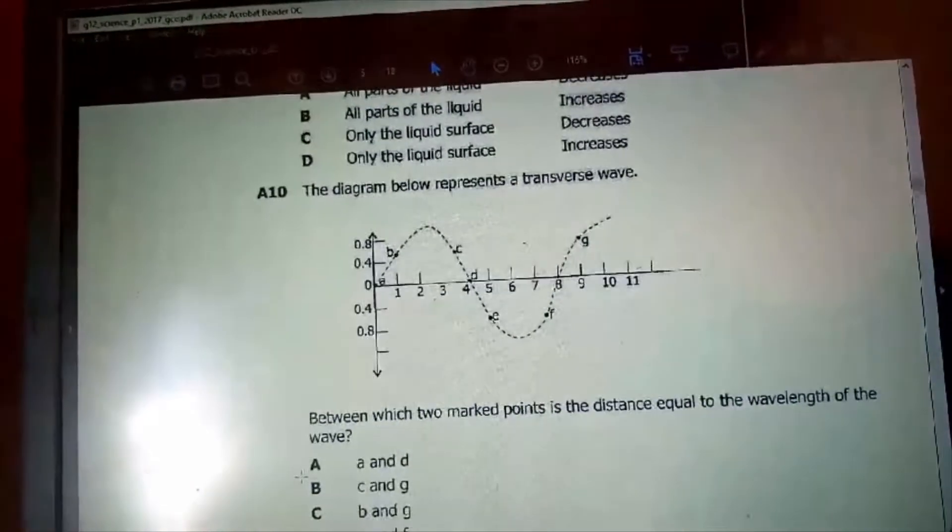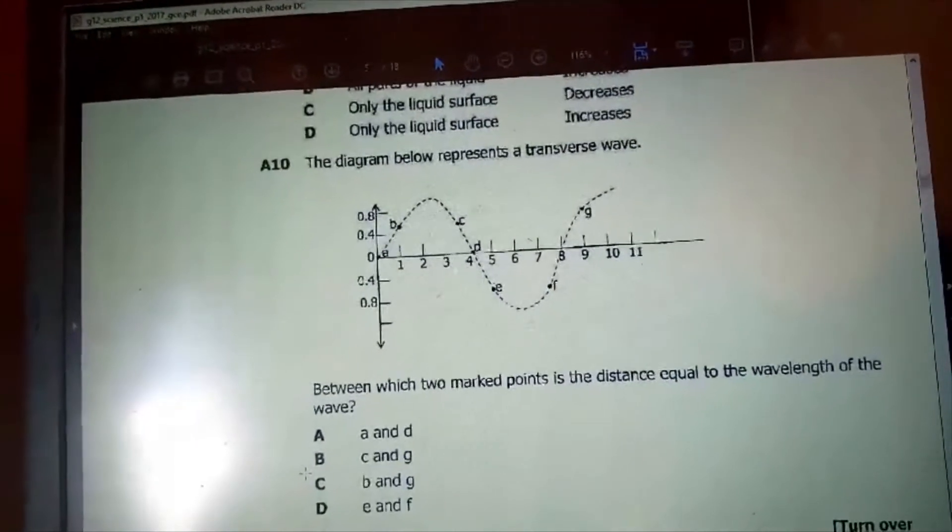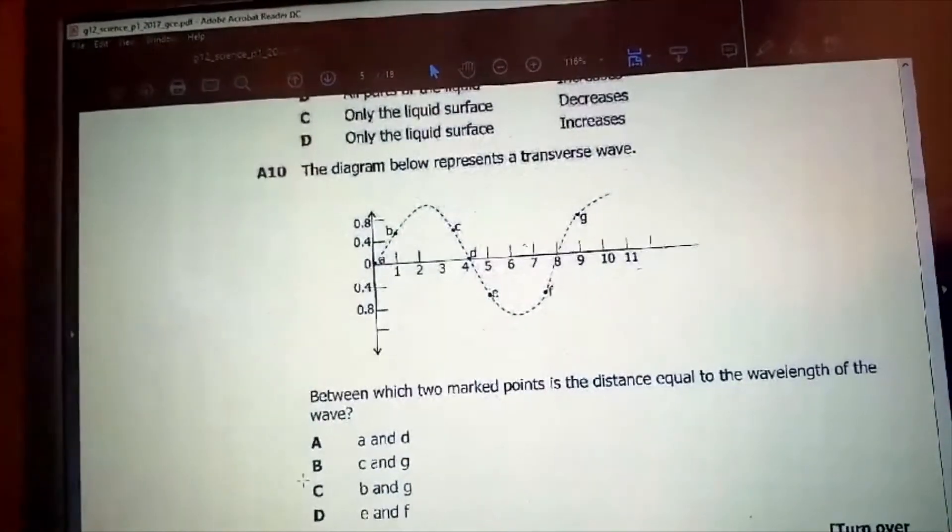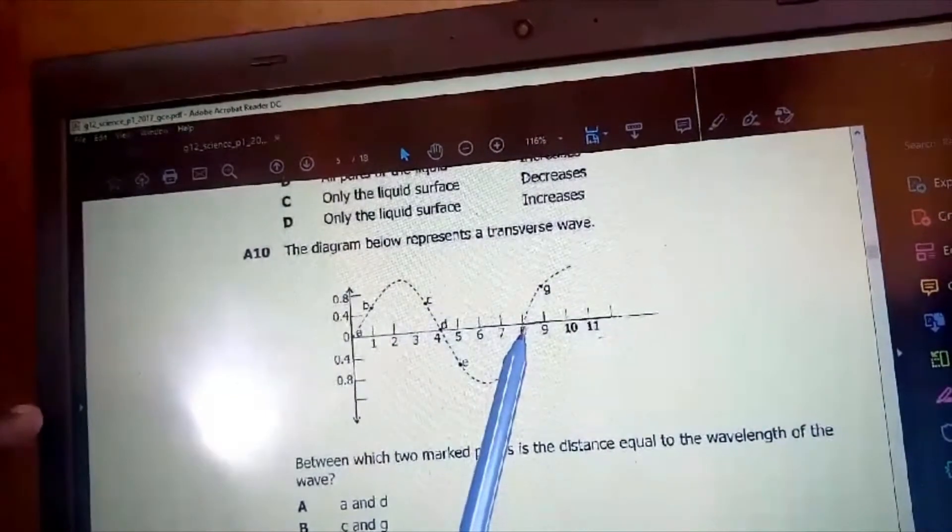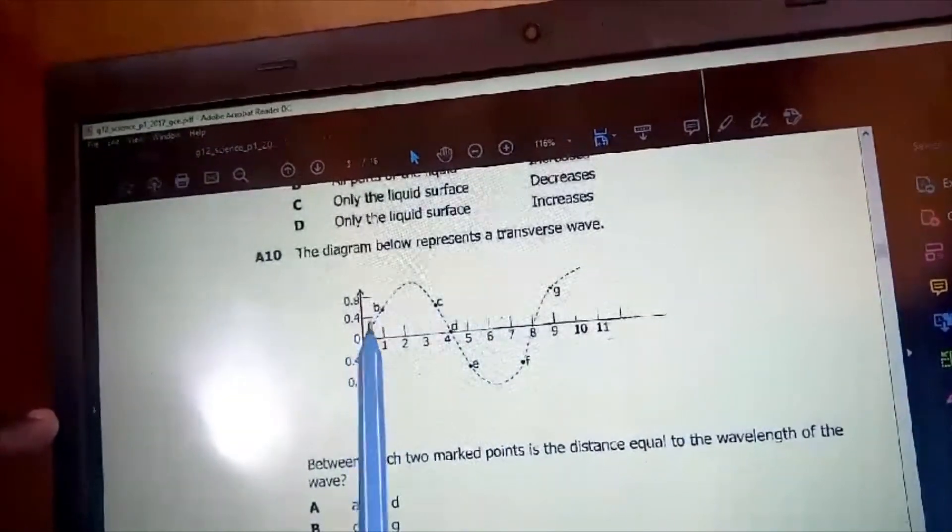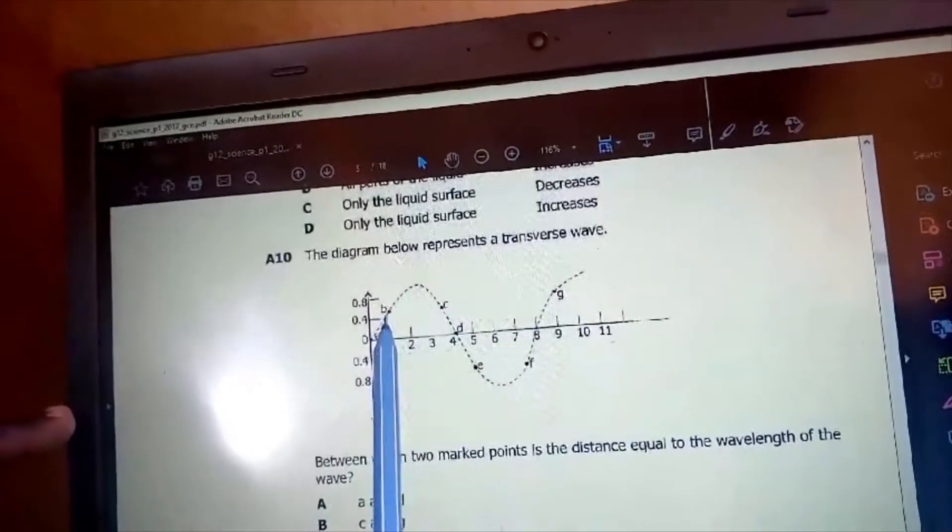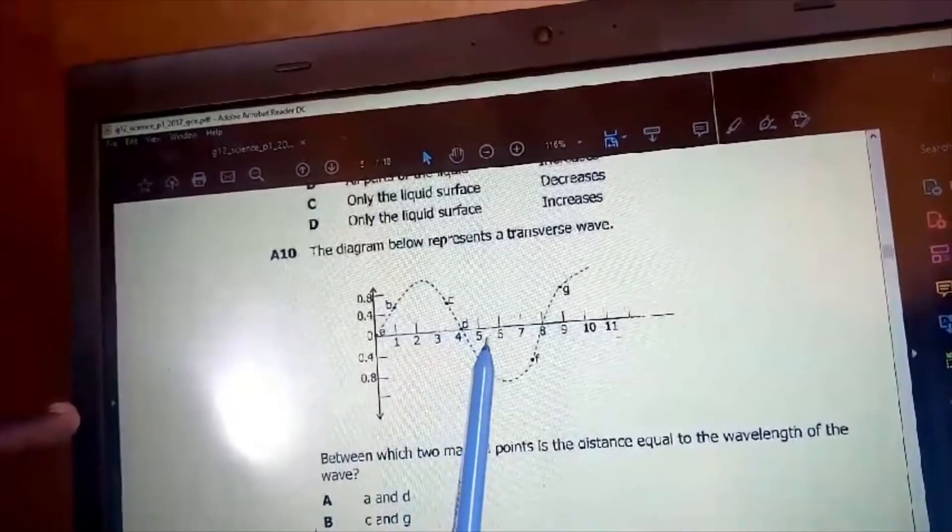For question 10, the diagram below represents a transverse wave. Below which two marked points is the distance equal to the wavelength of the wave? So if you look at this point from A to here, that's the wavelength - that's one wavelength. And when we start from here, we don't have any point here. So when we start from here, this is B and it should go all this way.